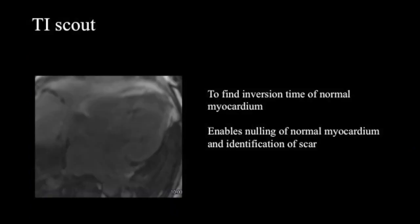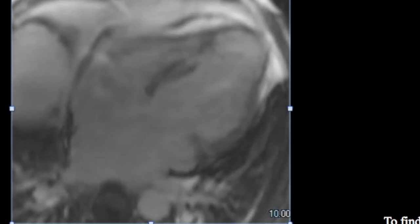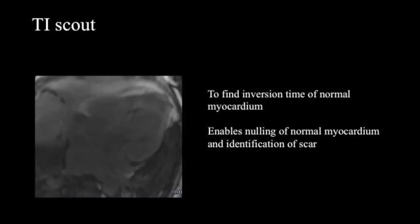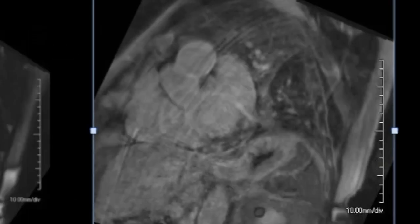TI scout is a sequence used just before late gadolinium enhancement imaging to find the inversion time and null the normal myocardium. This yields better visualization of myocardial scar or fibrosis on a PSIR sequence.